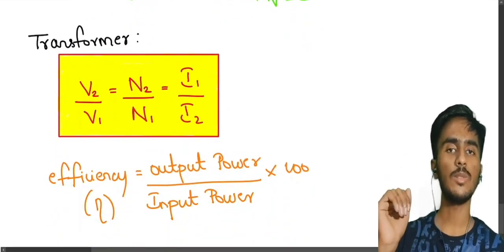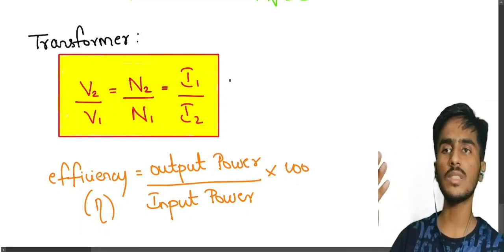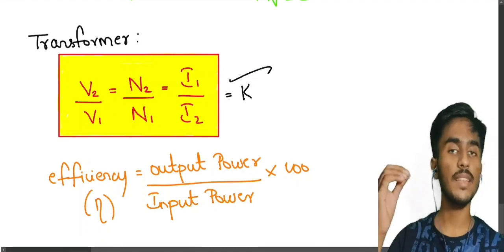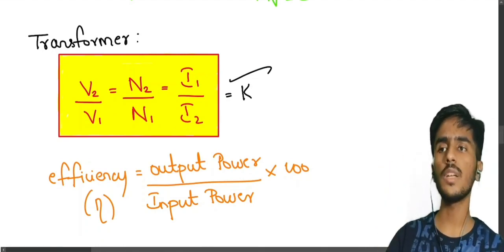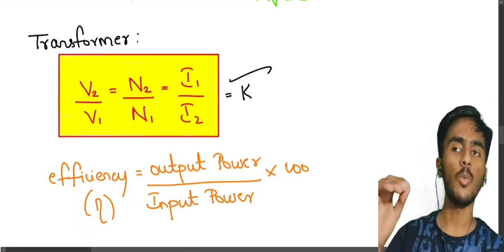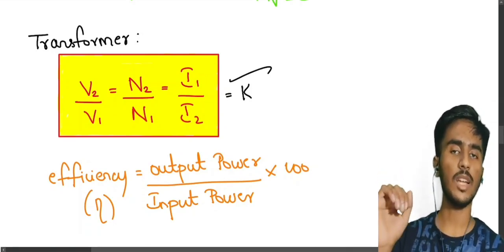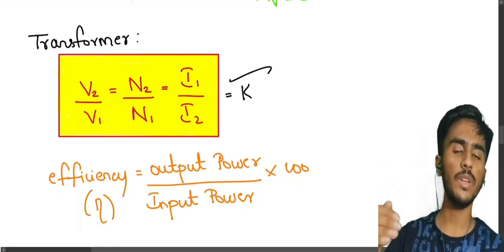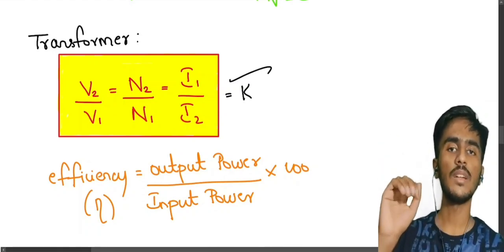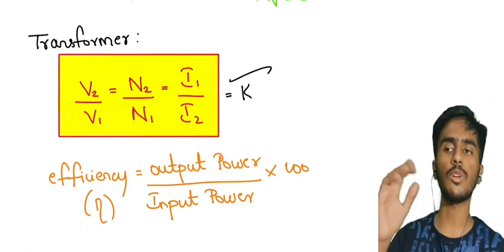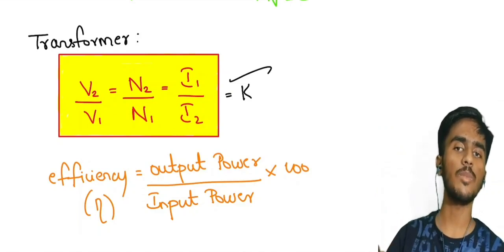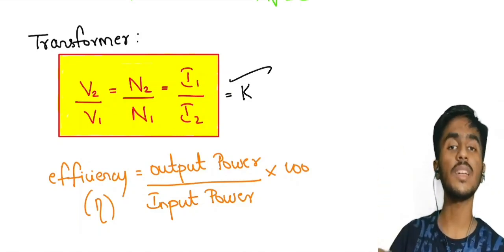We will now go to the transformer. In a transformer, there are two important formulas. The transformer ratio K is defined as: K equals V2 by V1, equals N2 by N1, equals I1 by I2 — where 1 refers to the primary coil and 2 refers to the secondary coil. The efficiency of a transformer is: output power divided by input power, multiplied by 100.